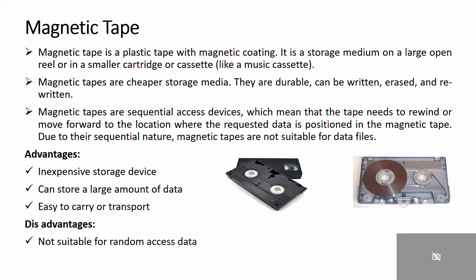Magnetic tape is a plastic tape with a magnetic coating used as a storage medium on large open reels or in smaller cassettes, similar to a musical cassette, as you can see in the picture. Magnetic tapes are cheaper storage media, durable, and can be erased and rewritten. Magnetic tapes are sequential access devices.